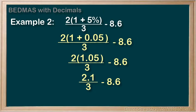And we're now ready for the division. 2.1 divided by 3 equals 0.7. And now for subtraction. We can finally get around to the 8.6. 0.7 minus 8.6 equals negative 7.9. And we're all done.